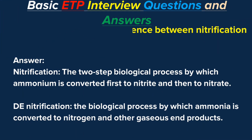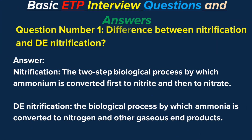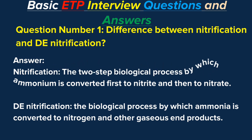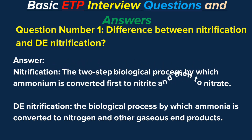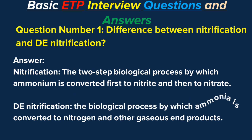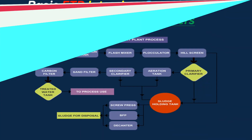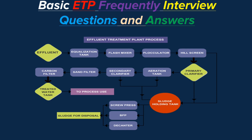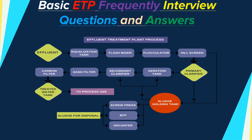Question number 1: Difference between nitrification and denitrification? Answer. Nitrification is the two-step biological process by which ammonium is converted first to nitrite and then to nitrate. Denitrification is the biological process by which ammonia is converted to nitrogen and other gaseous end products.